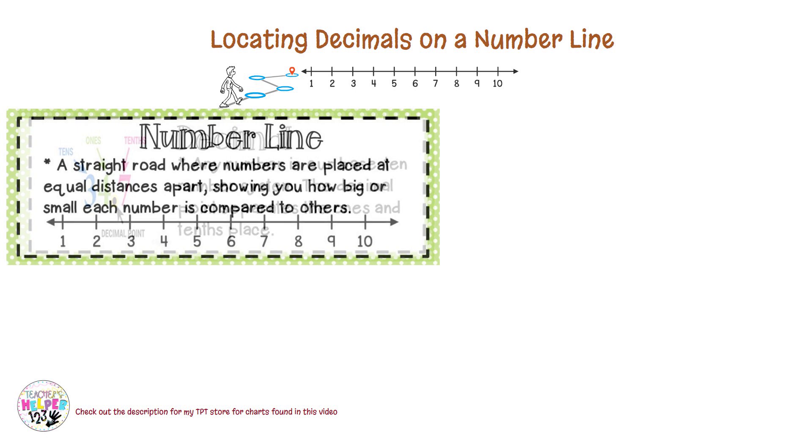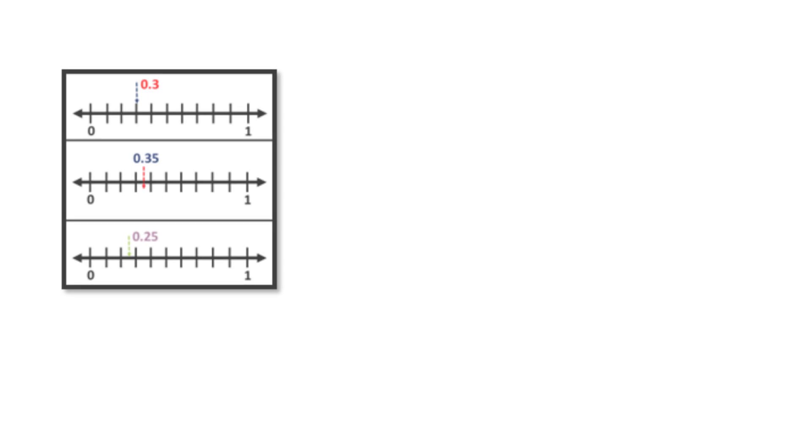Our next word is number line. A number line is a visual way to represent numbers from increasing to decreasing in value. As you can see, this shows a number line, which is a horizontal line, from left to right. And on this number line, you have zero to one with dashes in the middle. The dashes represent the numbers or decimals between the digits zero and one.